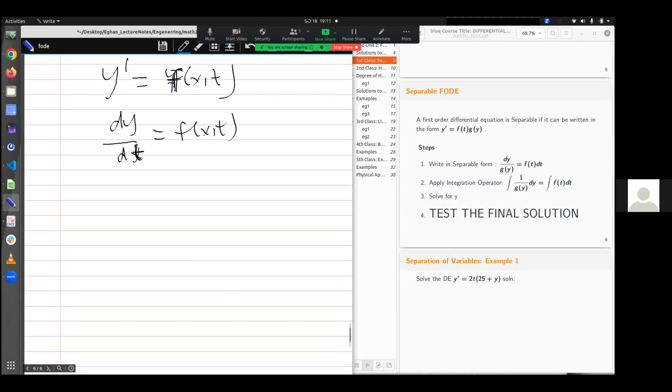If I can write this such that I'll have this in terms of y only and then in terms of t only, then the function is separable. If I can't do that, then it is not separable.